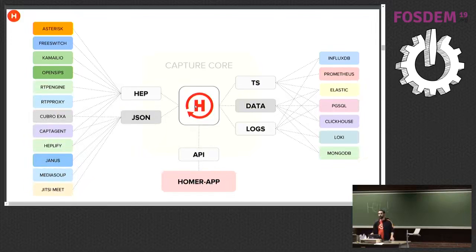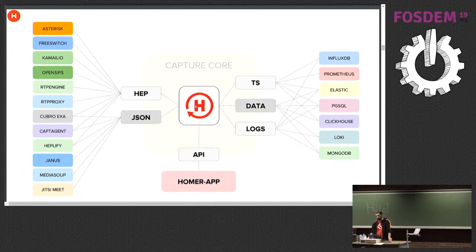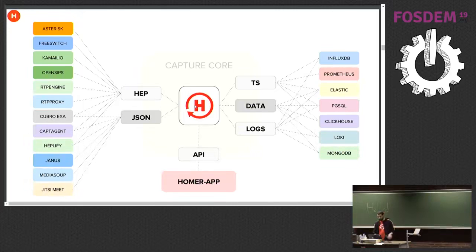What we really wanted was to give people the choice and the option to do what they want, because a lot of our users and customers already have some of those systems. They're already tracking system load or other application status somewhere. We want to make it easy to plug into those platforms — be it metrics, logs, or whatever else. You see here InfluxDB, Prometheus, and Elastic as the three most popular targets for statistics. You could build a Homer that just sends everything to Elasticsearch — no UI, no databases — and mix it with other data you already have.